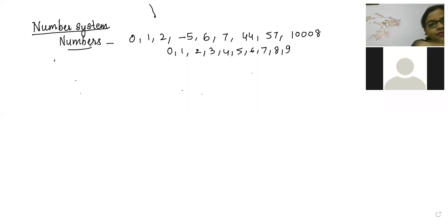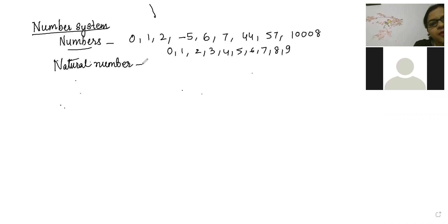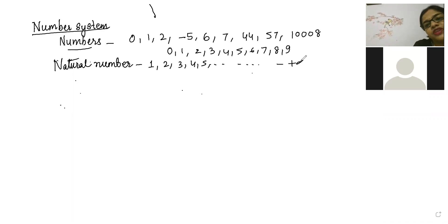Shall we start from the beginning — what are the sets containing? First we will study about natural numbers. The numbers which start from one, two, three, four, five and keep on going till positive infinity will be called as natural numbers.